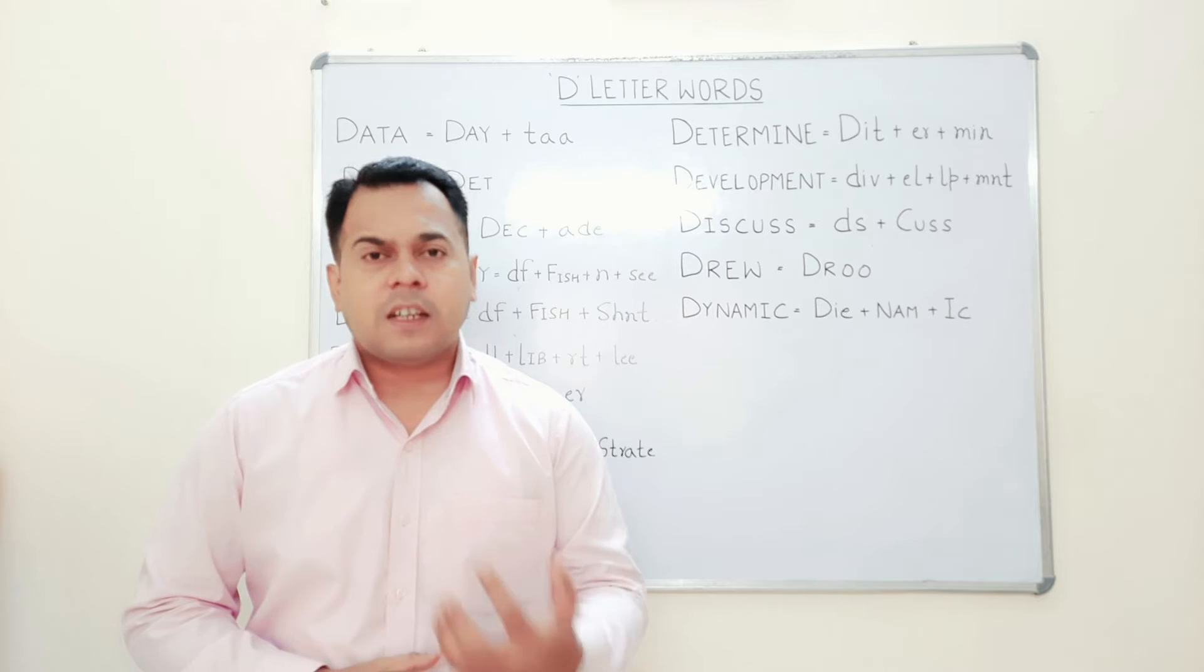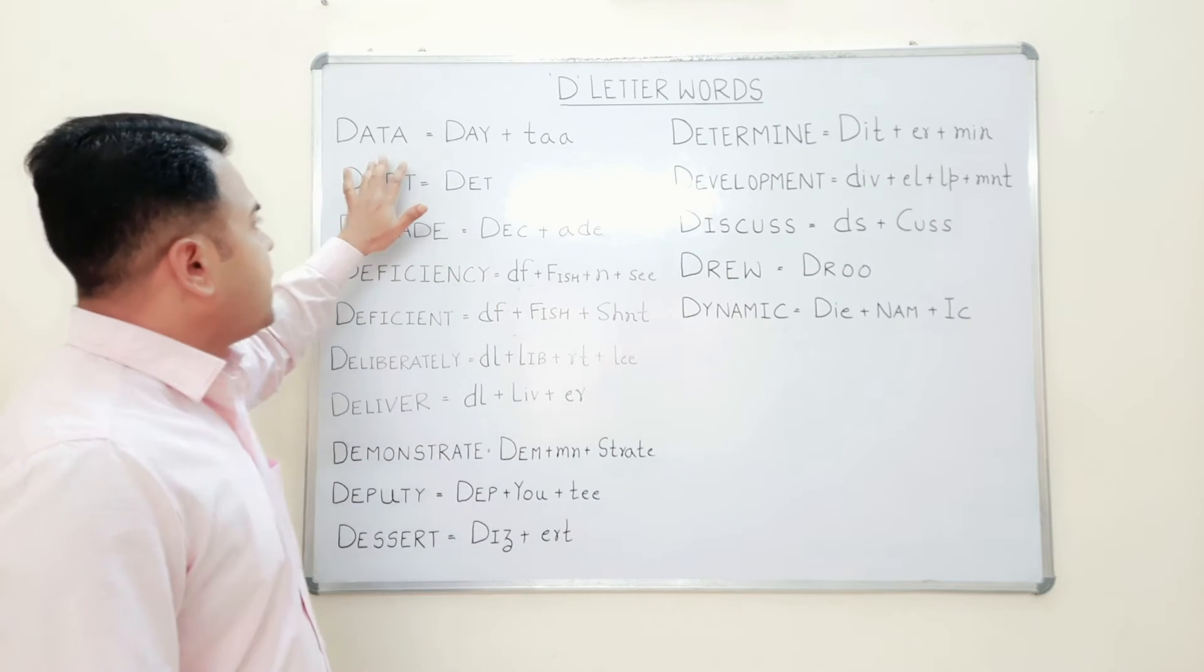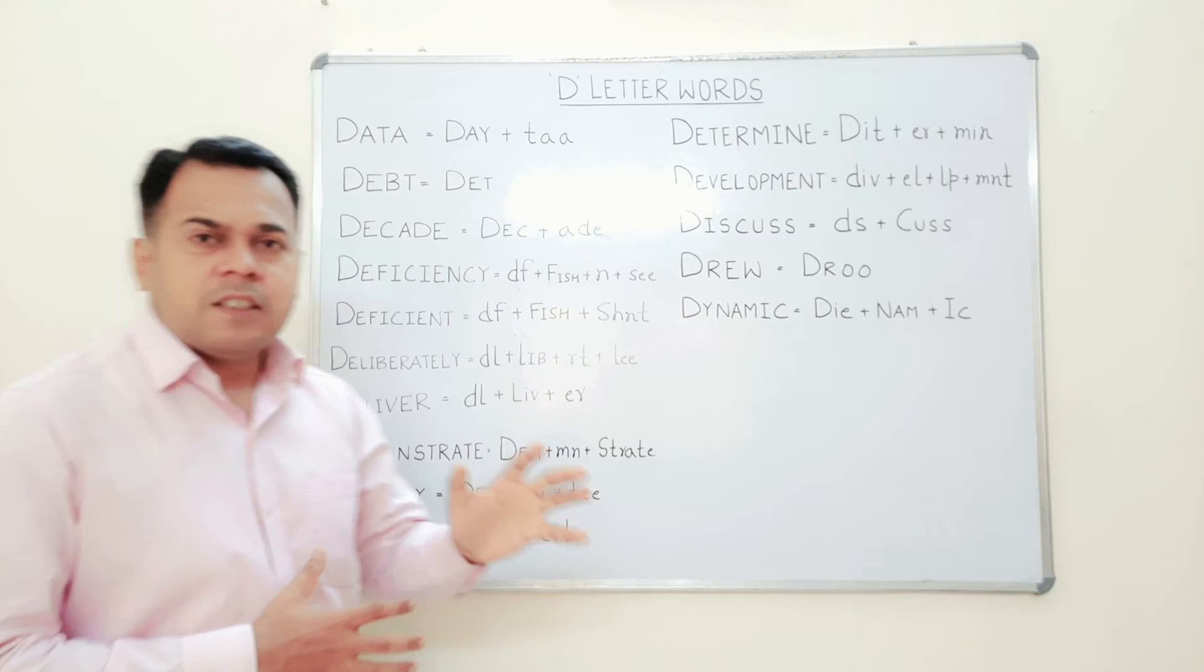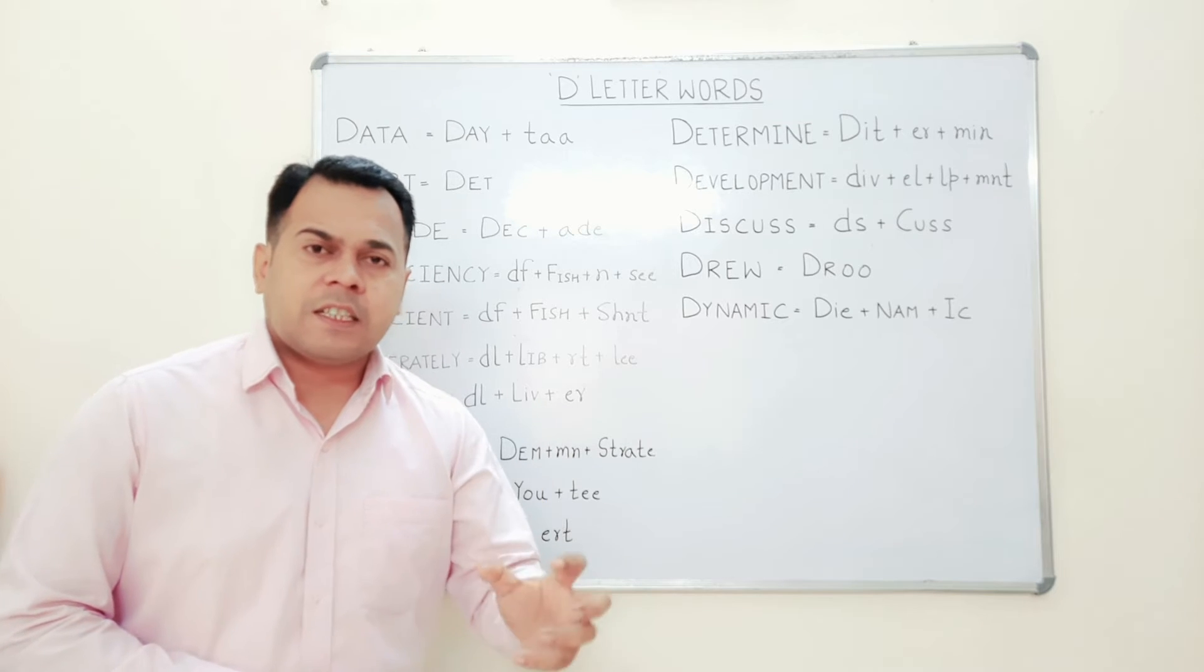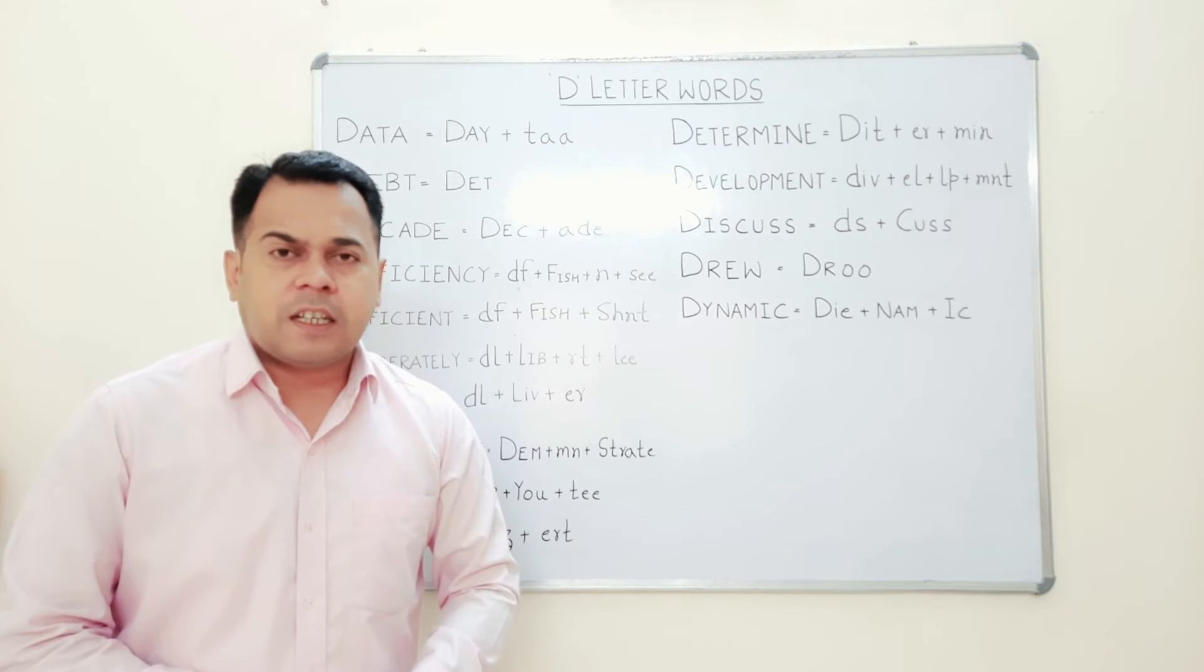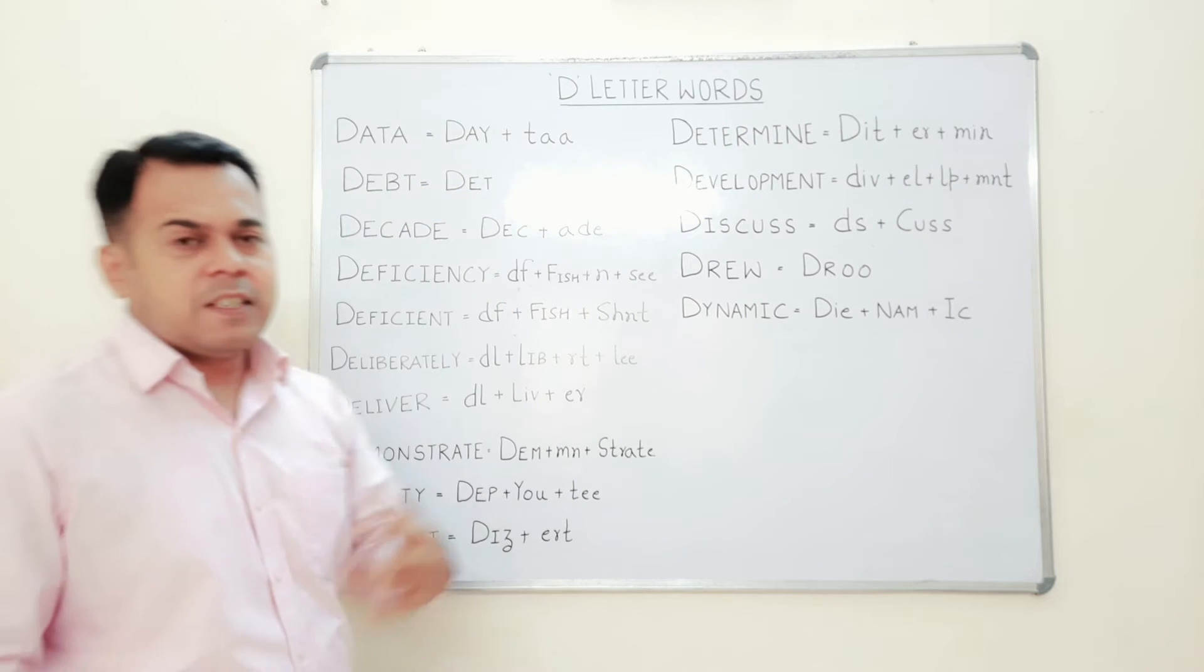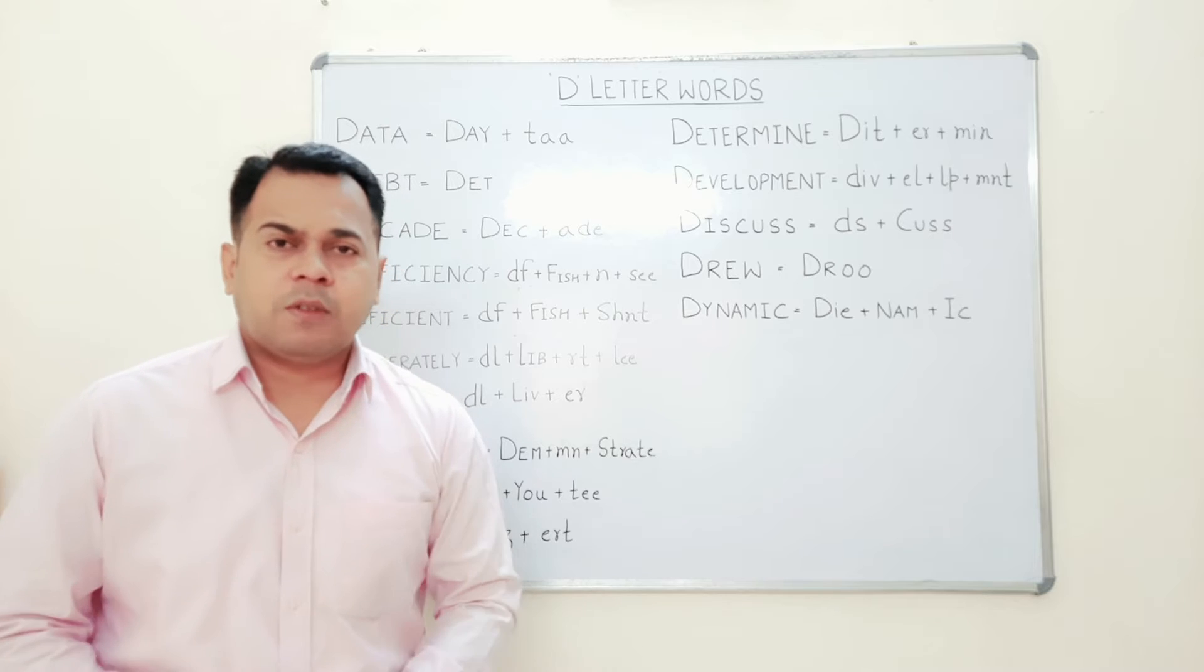Let's begin. Data - data means some set of information. So I have all the data in my pen drive. It's data, it's not data. Next, debt - that is like some kind of loan. I don't have any debt at current situation. Debt means some kind of loan.